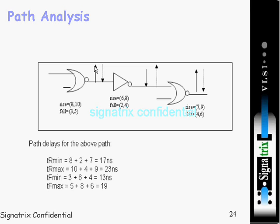Going further back, we are getting low, so the input must be high. High to low is nothing but fall. Maximum fall is five, so that is why they have considered five.